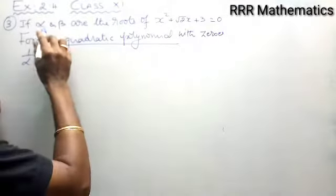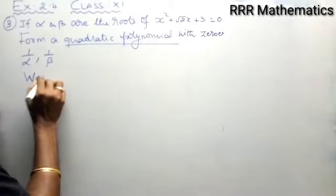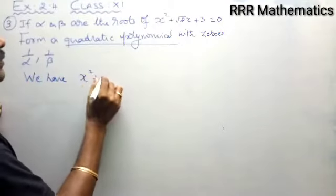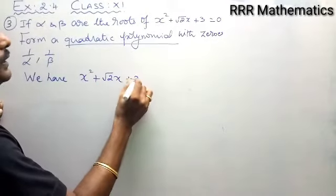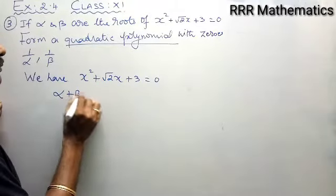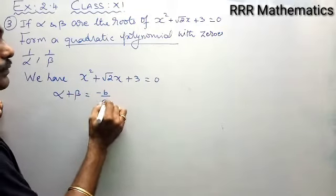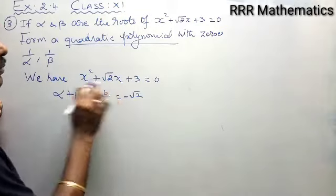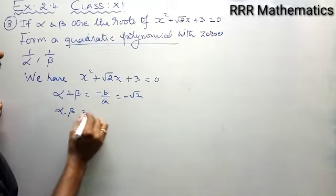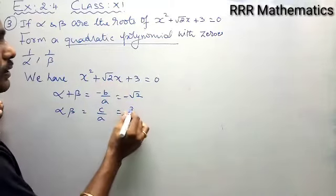We have x squared plus root 2 x plus 3 equal to 0. So, sum of the roots = minus b by a, which is minus root 2 by 1. Product of the roots = c by a, which is 3 divided by 1, that is 3.